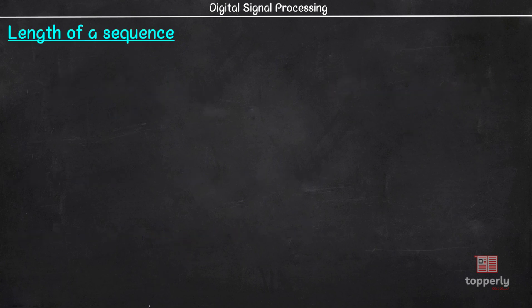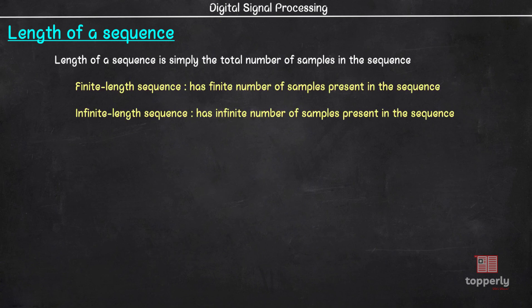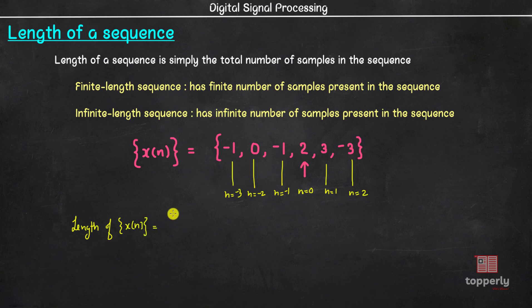Now let us see the length of a sequence. Length of a sequence is simply the total number of samples in the sequence. And based on this, sequences can be finite length or infinite length sequences. For example, consider this sequence. Here this sample corresponds to n equal to 0, this n equal to 1 and this is n equal to 2. Here n equal to minus 1, n equal to minus 2 and n equal to minus 3. So the length of sequence is 2 minus minus 3 plus 1. This plus 1 is to account for the sample at n equal to 0. And this expression is equal to 6. So the length of this sequence is 6 and this is a finite length sequence.